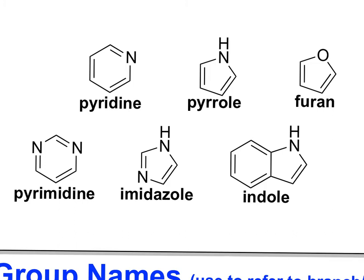You should be familiar with and able to recognize, based on the name or the structure: pyridine, pyrrole, furan, indole, imidazole, and pyrimidine. As we go through the rest of the chapter, we are going to discuss why each of these structures — which are very common in chemical and biological systems — meets the criteria for being described as an aromatic compound.